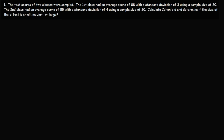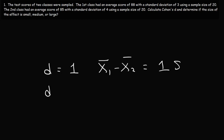In this video, we're going to talk about how to calculate Cohen's D and determine if the size of the effect is small, medium, or large. But let's talk about what Cohen's D means, or what it tells us. A D value of 1 tells us that the difference between the two sample means is equal to one standard deviation. A D value of 2 means that the difference of the sample means is equal to two standard deviations. A D value of 0.5 means that the difference of the two means is equal to half of a standard deviation.